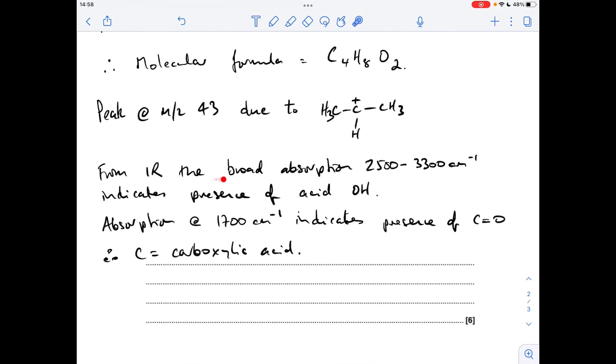So in words from the infrared, the broad absorption between that range indicates the presence of an acid OH, and the absorption at 1700 cm⁻¹ indicates the presence of a C=O, therefore C must be a carboxylic acid.